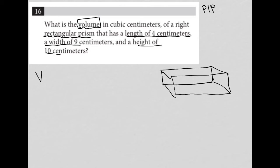The volume is equal to the length times the width times the height. The question tells me that L is equal to four, that W is equal to nine, and H is equal to 10. All the units are the same, centimeters, so there's no need to convert anything here.